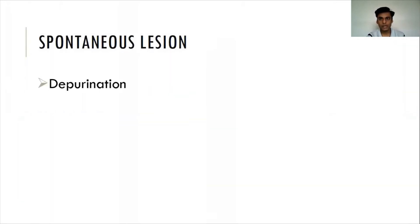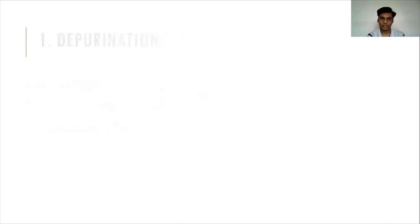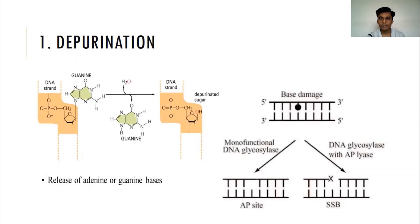Spontaneous lesions: some mutations are generated due to naturally occurring damage to DNA. This damage includes depurination, deamination, and oxidative damage. The two most frequent spontaneous lesions result from depurination and deamination. Depurination consists of disruption or breakage of the glycosidic bond present between the base and the deoxyribose, releasing the base — either adenine or guanine residues — which results in an apurinic site. This apurinic site leads to mutation by incorporating incorrect bases during replication. Loss of purine nucleotide bases leads to apurinic sites, and loss of pyrimidine nucleotides leads to apyrimidinic sites.